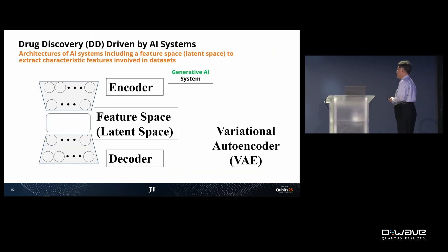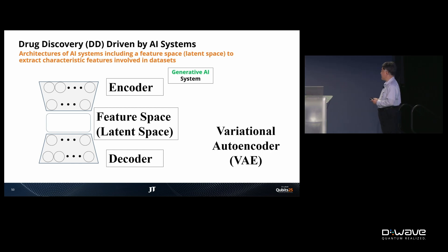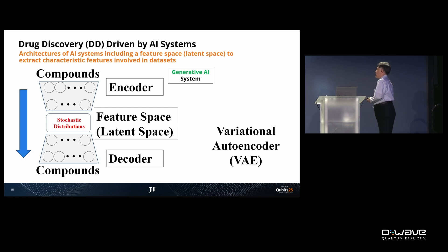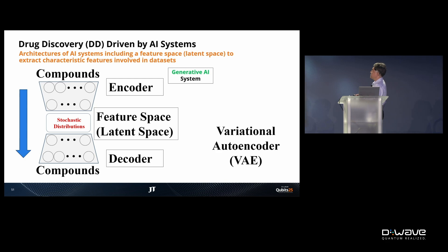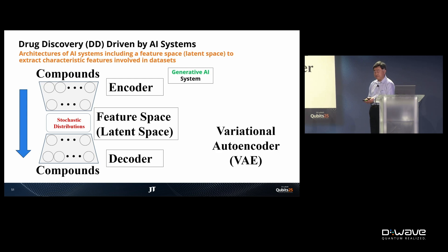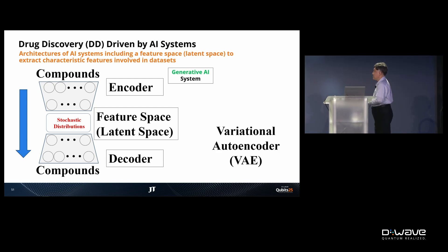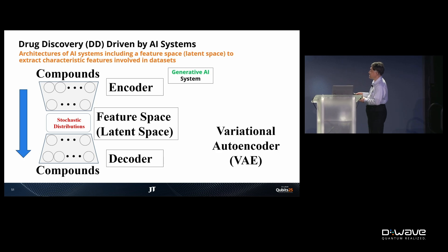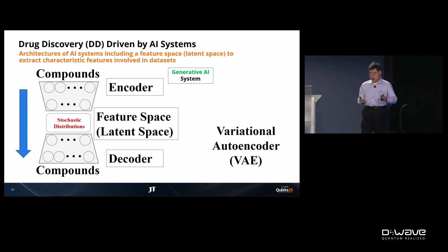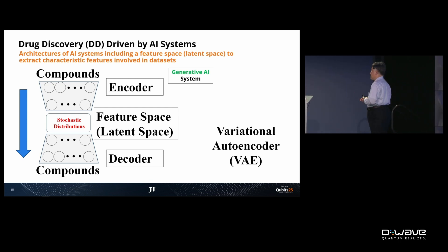We need technologies such as advanced AI. This is an example of a generative AI model — a VAE. Input data is put into the encoder and processed. In the training phase, the output should be almost identical to the input data.